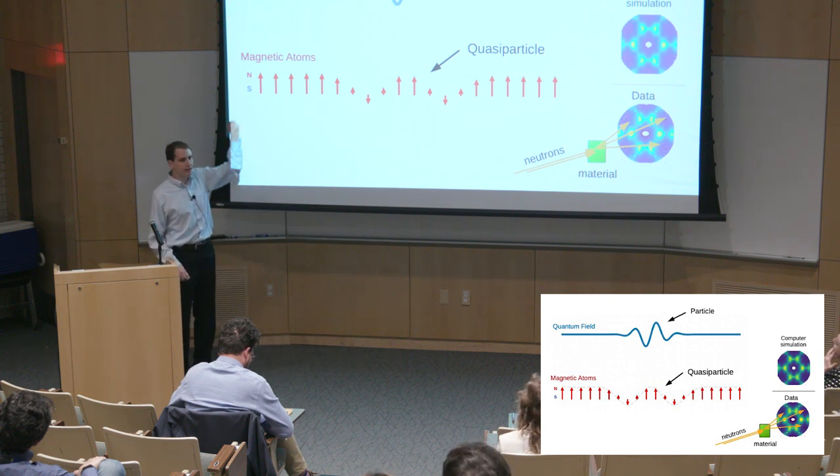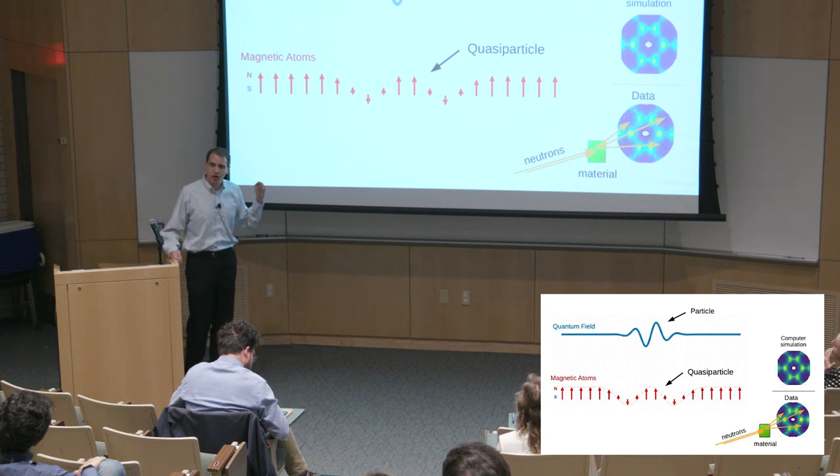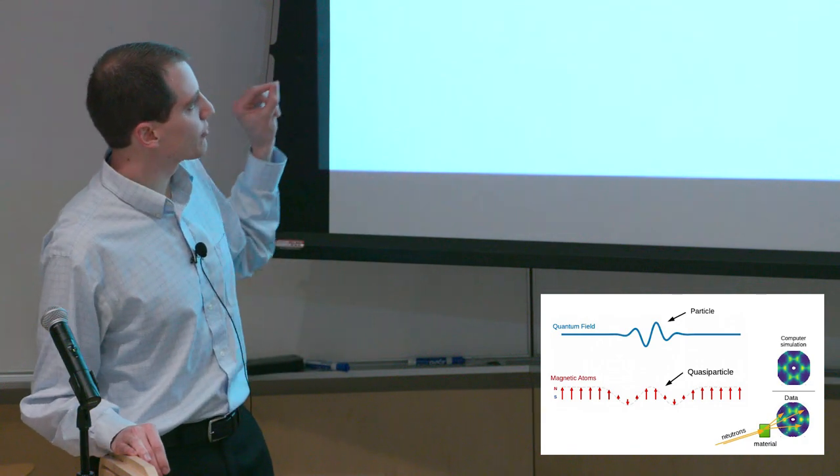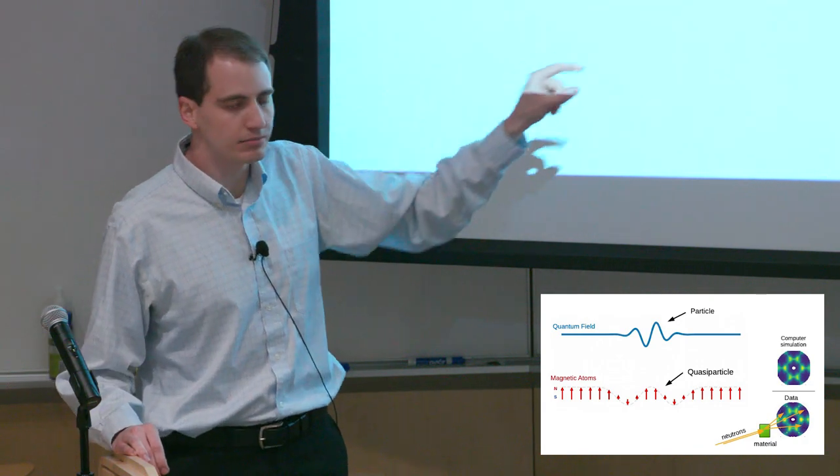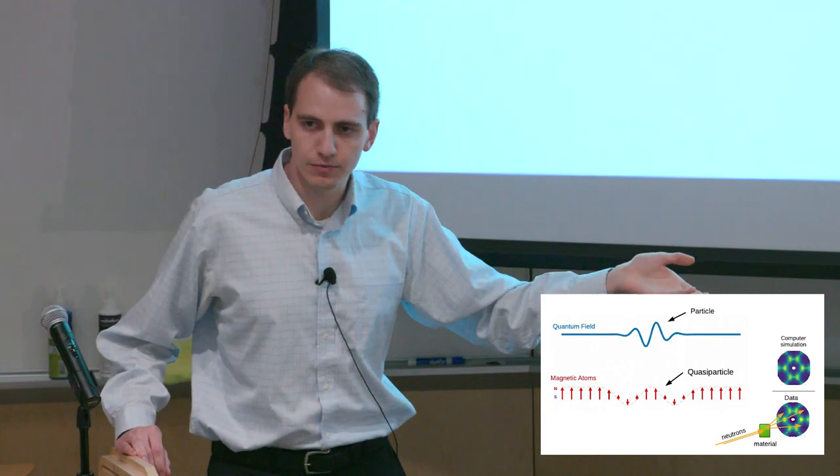Mathematically speaking, a particle is a wave, or an excitation in a quantum field. But the same mathematics also applies to magnetic materials. If we have an array of interacting magnetic atoms, shown here on the bottom, we can create a wave of magnetism moving through this material.